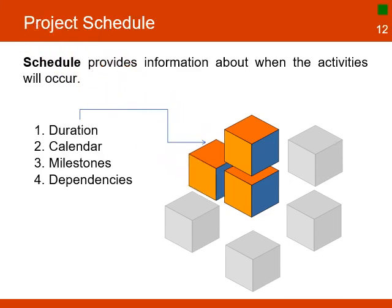The third component is the schedule, which provides information on the time the activities will occur. This module registers information about the start, duration, and end of all project activities. It shows information in the form of calendars or Gantt charts, identifying milestones and dependencies within activities or even other projects.